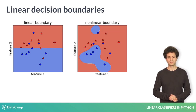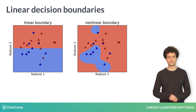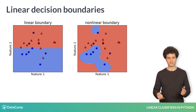A nonlinear boundary is any other type of boundary. Sometimes this leads to non-contiguous regions of a certain prediction, like in the figure. In their basic forms, logistic regression and SVMs are linear classifiers, which means they learn linear decision boundaries. In Chapter 4, we'll discuss nonlinear versions that produce boundaries like the one on the right.